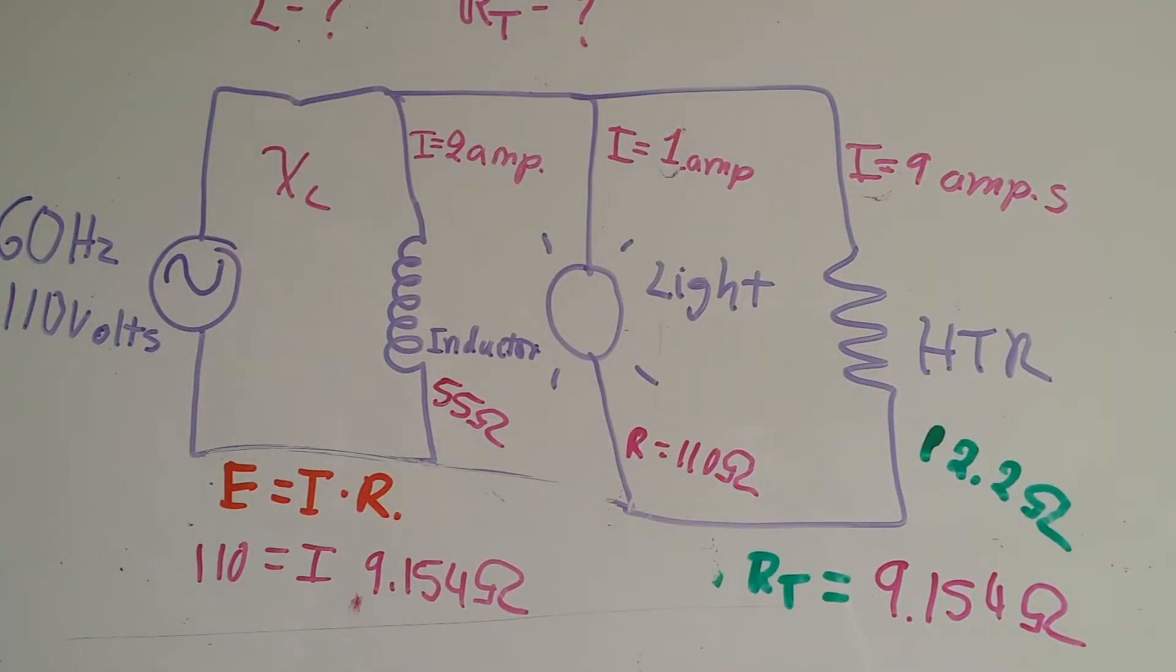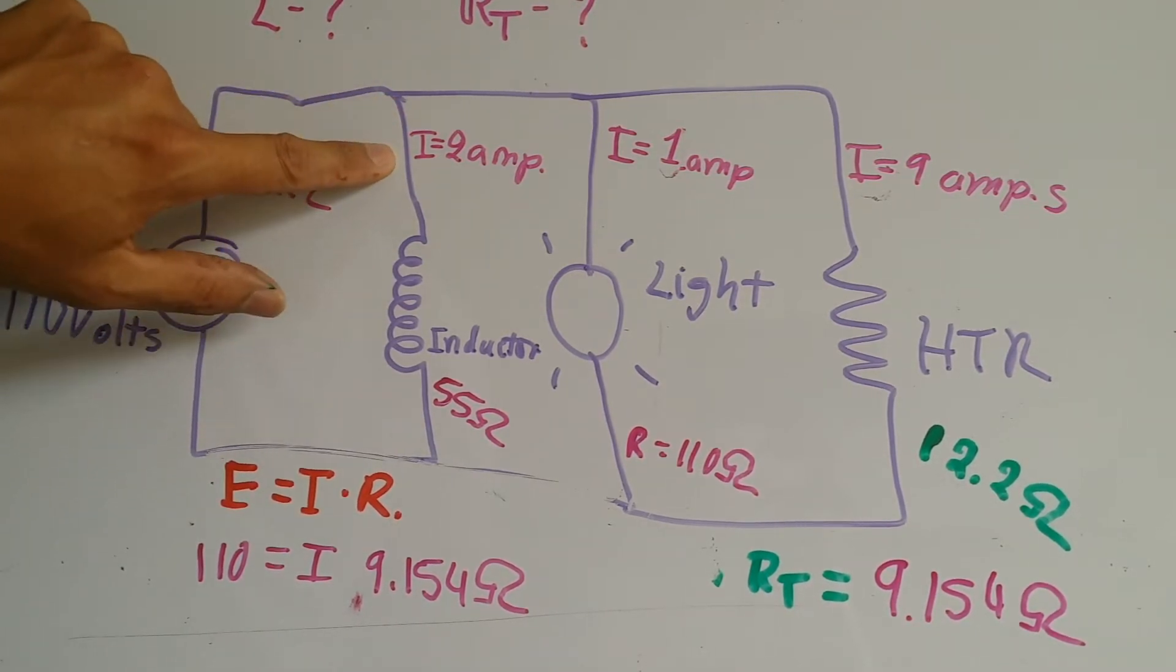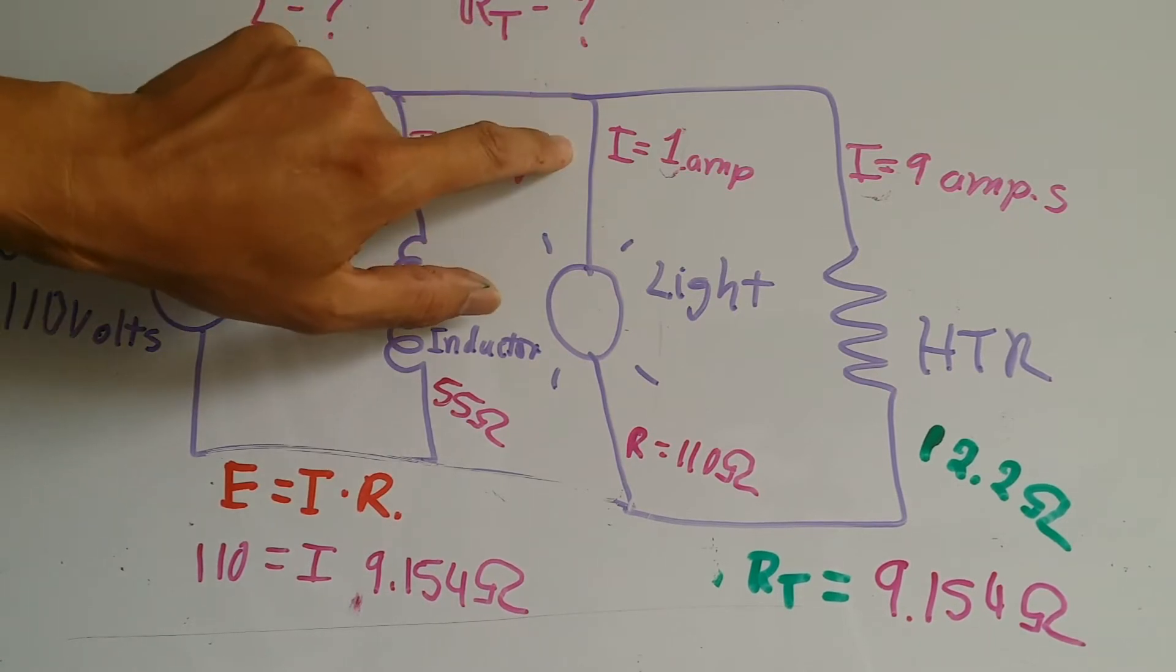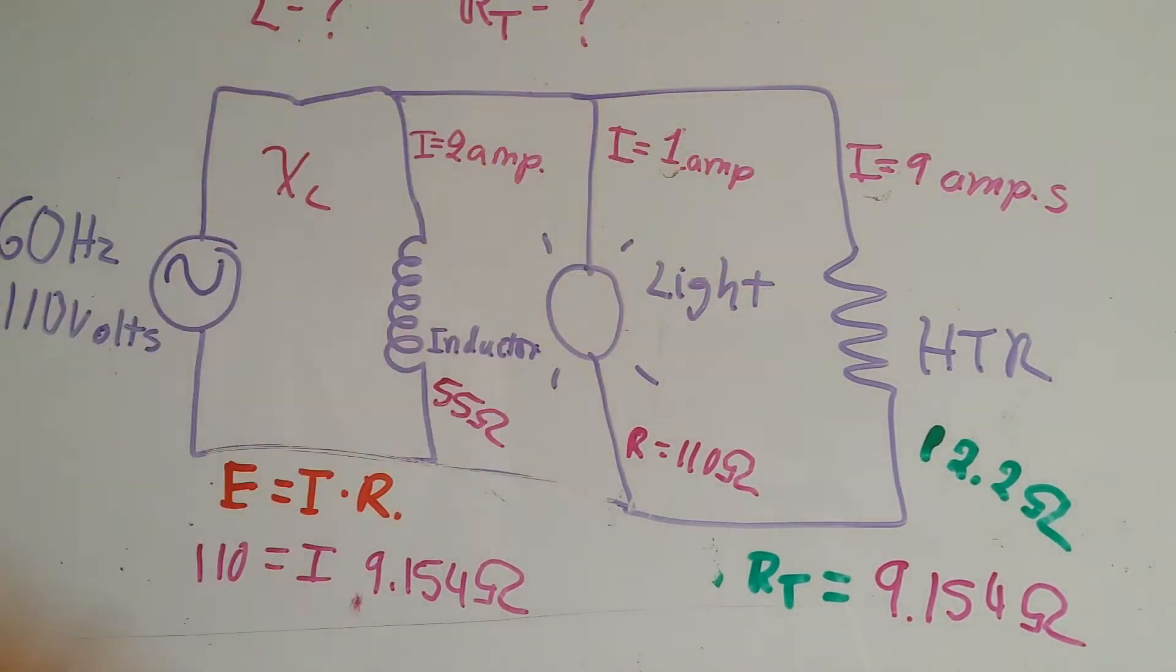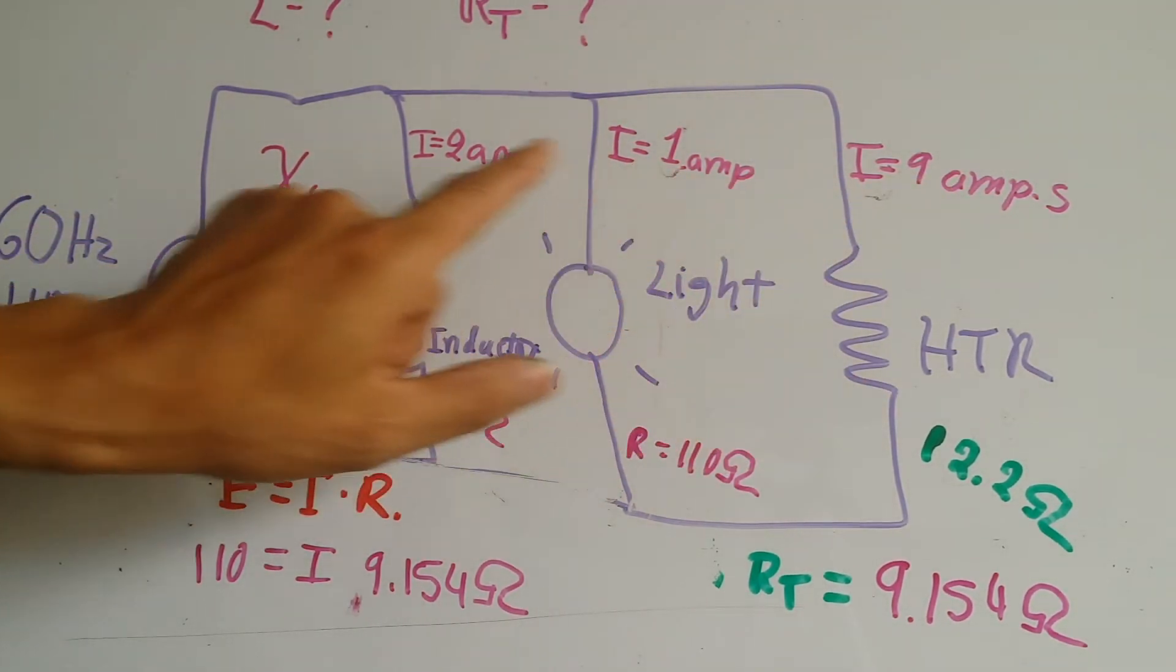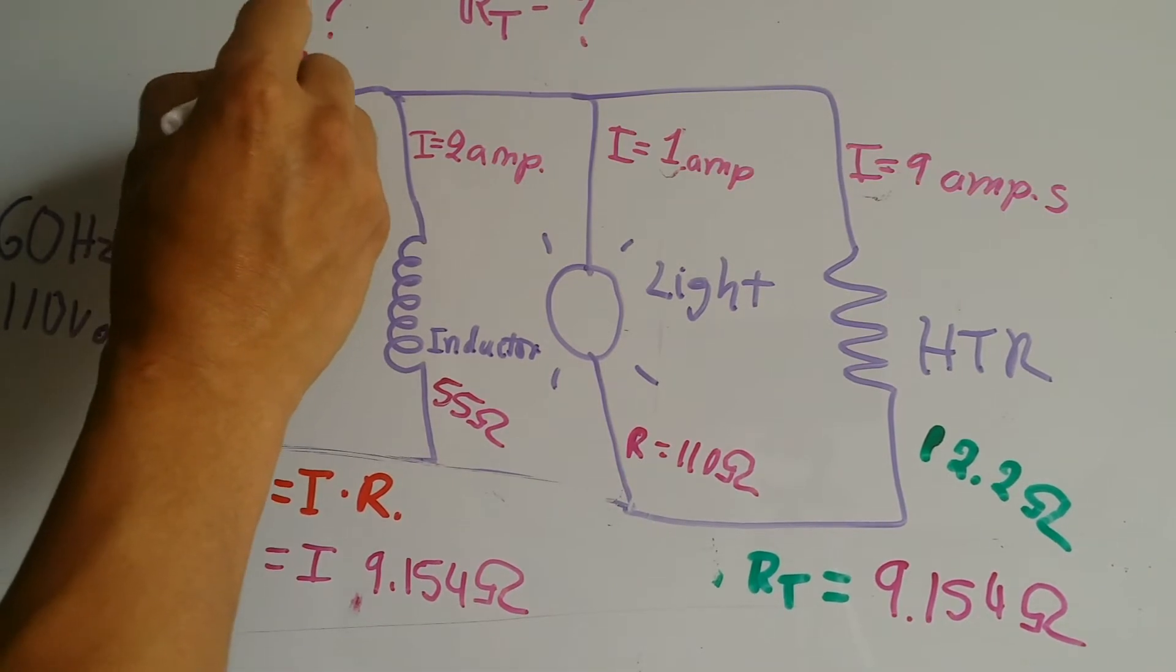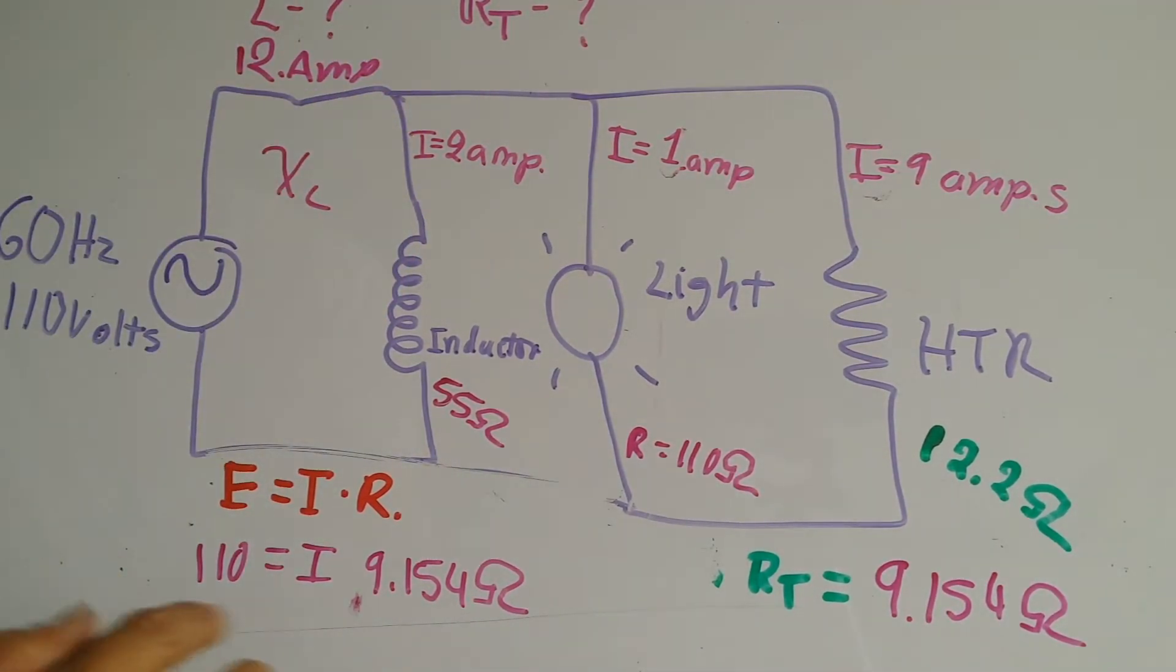Now to double check my work, the total current that goes through here: some electrons go this way, 2 amps; some go this way, 1 amp; and some go that way, 9 amps. So if I go 9 plus 1 plus 2, I should have 12 amps going through here. That means if I did my calculations correctly, since I could now replace all of these with a big resistor of 9.1 ohms, when I do the calculations I should also get 12 amps.